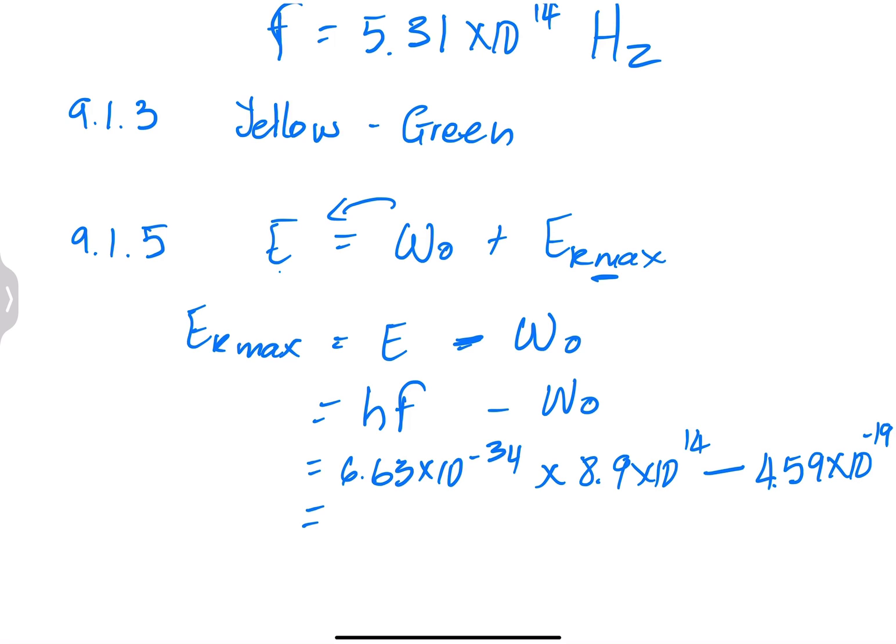All we need to do is a bit of calculator work. That's minus 34 multiplied by 8.9, positive 14 to the exponent 14, and we subtract 4.59 exponent minus 19. So I get an answer of 1.31 times 10 to the exponent negative 19 joules.